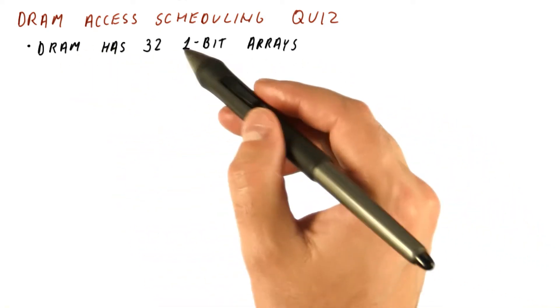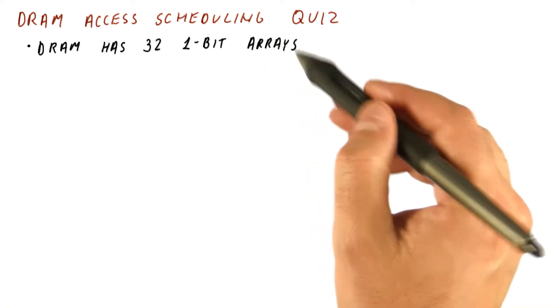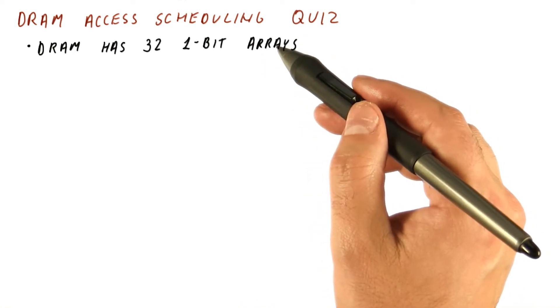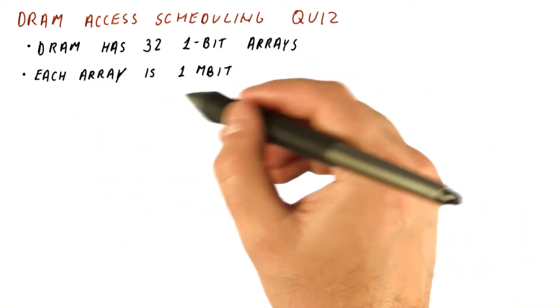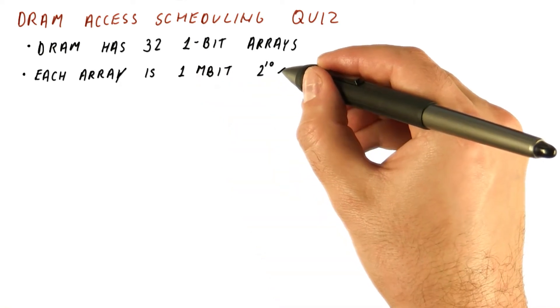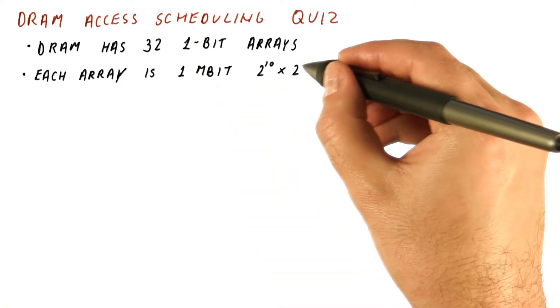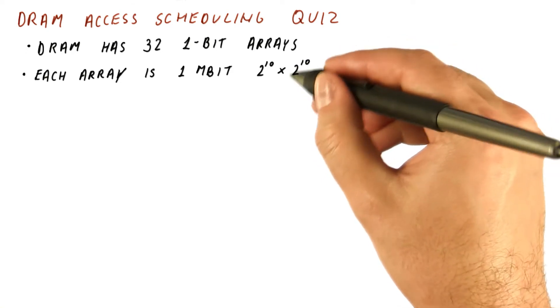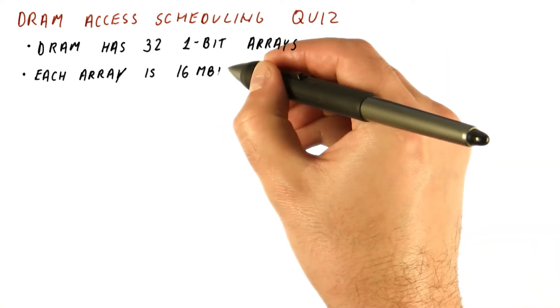Let's assume we have a DRAM memory that has 32 one-bit arrays, just like the one we have seen before. Each array is one megabit, and it's organized as two to the tenth rows times two to the tenth bits per row.